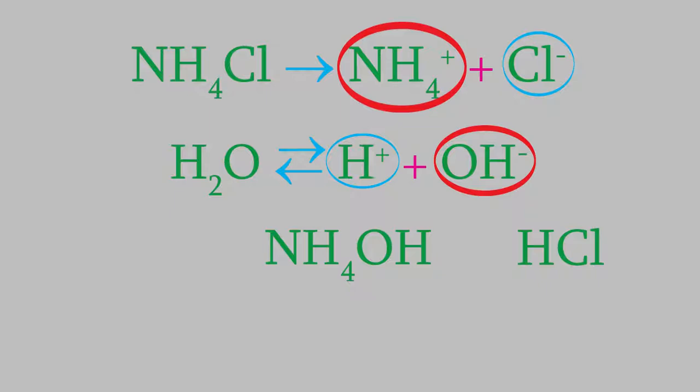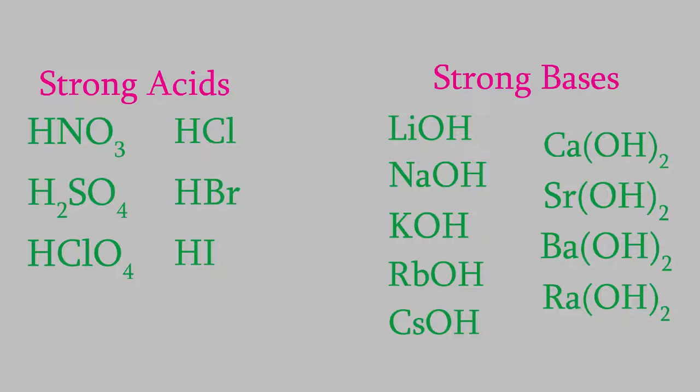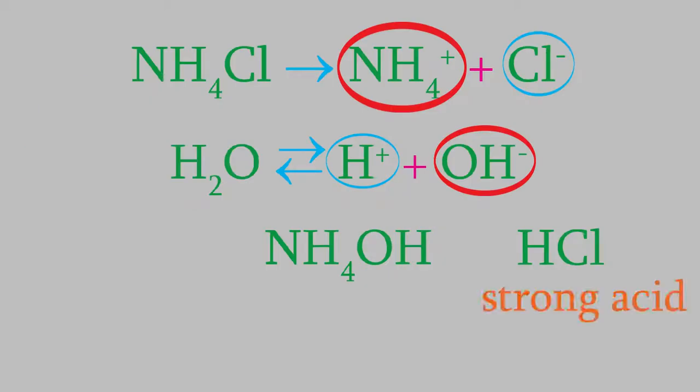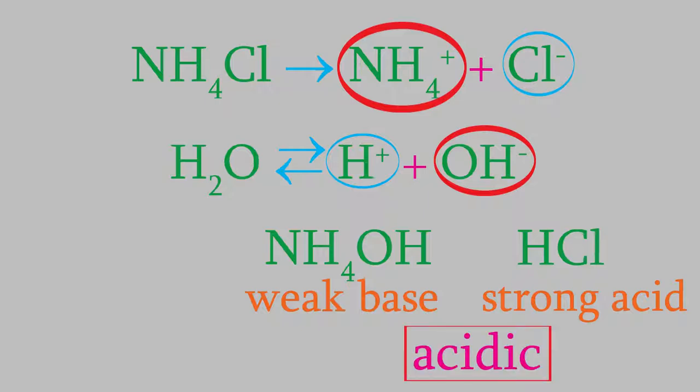Back in video 19, we saw that there are only a small number of strong acids and bases. Here's the list of those again. If you haven't learned this list of strong acids and bases, it would be a good idea to do so now, because this list is going to help us understand why some salt solutions are acidic and some are basic. For example, in the solution of ammonium chloride, we get hydrochloric acid, which is a strong acid. We also get ammonium hydroxide, which is a weak base. So overall, dissolving ammonium chloride gives us an acidic solution.